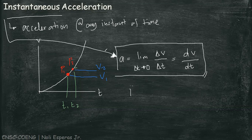The unit for instantaneous acceleration is the same as for average acceleration, which is length over the square of time. For the international standard, we have meters per second squared.